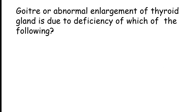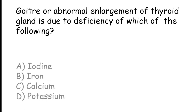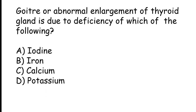Goiter, or abnormal enlargement of the thyroid gland, is due to deficiency of which of the following? Iodine, Iron, Calcium, or Potassium. The correct answer is Option A — Iodine.